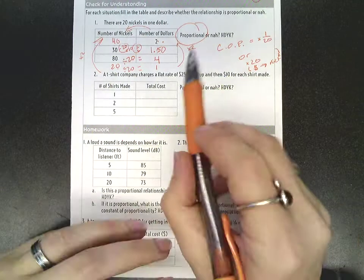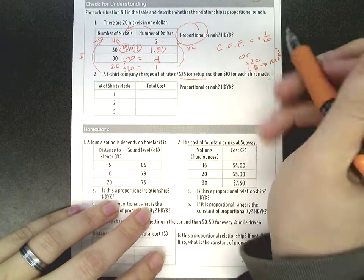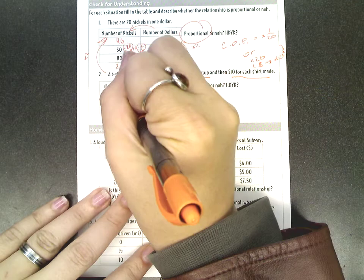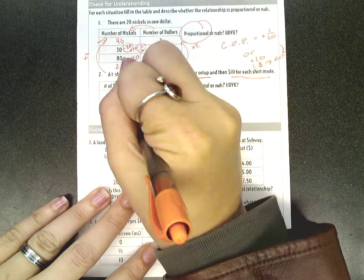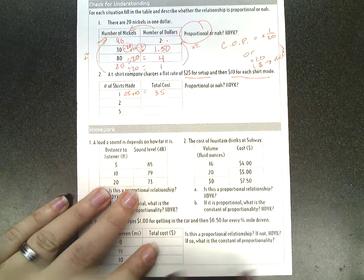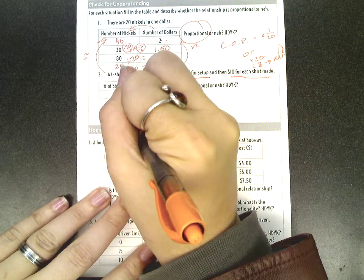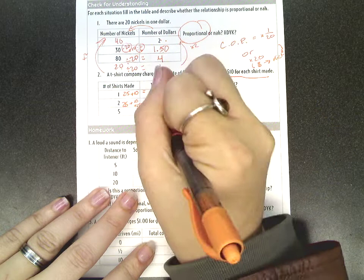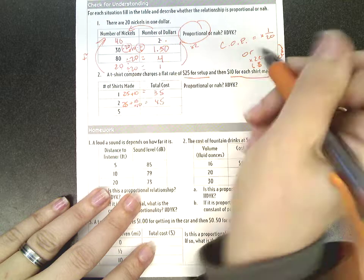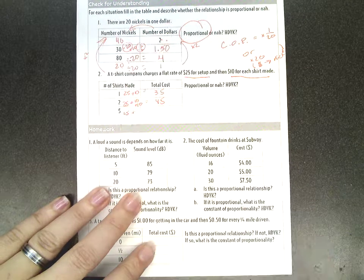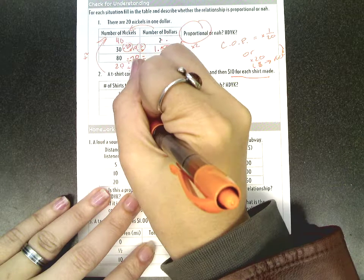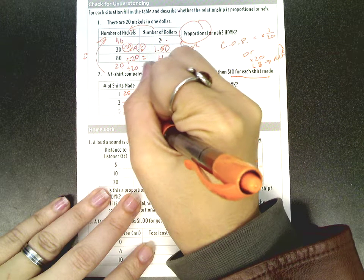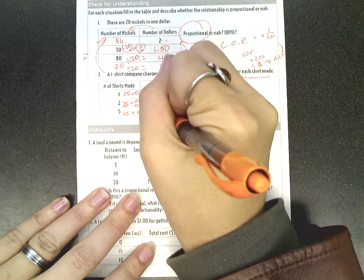How about this one? We have a flat rate of $25 for t-shirts set up, and then $10 for every shirt that's made. So if I make one shirt, I have to pay $25 for set up, plus $10 for one shirt, $35. If I make two shirts, I still pay $25 for set up, and 10 and 10, one shirt, another shirt, that's $45. If I make five shirts, I still pay $25 for set up. Now I have five shirts that are each 10. So I could say 10 times 5, which is $50 for the shirts, plus that $25 is going to be $75.